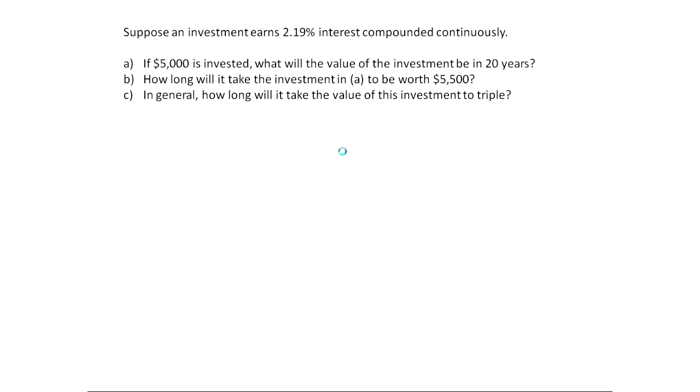So what about part C? How long will it take an investment in general here to triple? Meaning if you have some investment of P dollars, how long will it take that to be worth 3 times, 3P? So if we look at our formula in general, A is now 3P because in the future we want this to be worth triple, and P is the initial amount invested. E is a constant, and then R would be 0.0219, and then we're wondering what T is. This seems harder because we've got two variables, but think of this as a fixed value. This is fixed. It's definitely not 0, so I can divide both sides by P, just kind of like I did in part B.